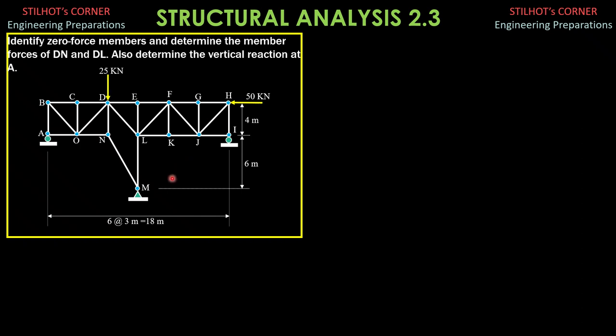So that makes it 30. The number of joints is 2, 4, 6, 8, 10, 12, 14, 15. So, 30 equals 2J, 2 times 15. So that's why it is statically stable and determinate truss.